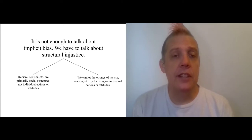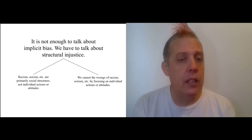So Haslinger has two basic lines of argument for the claim that we need to talk not just about implicit bias, but structural injustice. One is that things like racism and sexism are primarily social structures. That's the key to them, not individual actions or attitudes, whether those attitudes are conscious or unconscious. Furthermore, we cannot right the wrongs of racism, sexism, etc. simply by focusing on individual actions or attitudes. So these two go together, obviously. Basically, the problem isn't individual attitudes, and the problem can't be solved by focusing on individual attitudes.